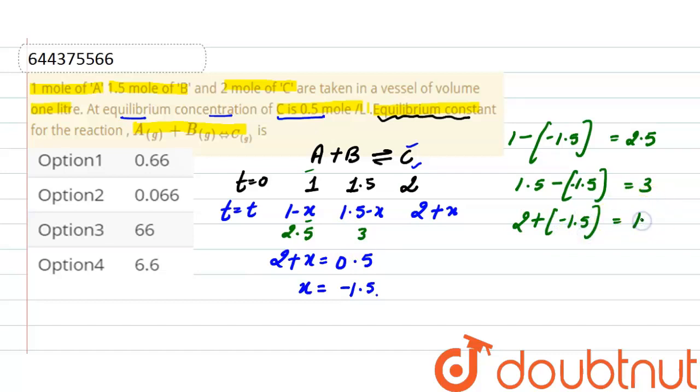And 2 plus minus 1.5 is equals to 0.5 moles of C are present at equilibrium.